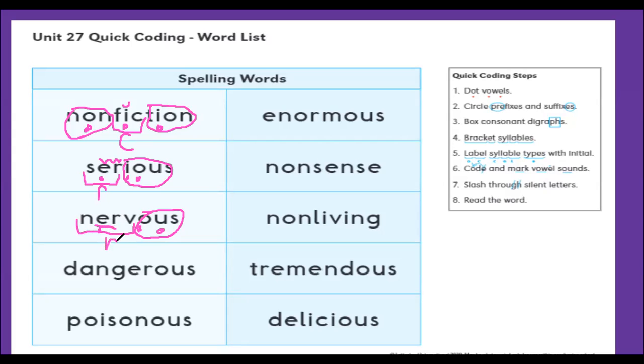Our next word is dangerous. We dot our vowels. We circle our suffix O-U-S. 'Dain' 'ger' - so we put our two syllable brackets. And we see for 'dain', the A says a long sound, but it is a closed syllable. 'Ger', E-R, so we know it's an R-controlled vowel.